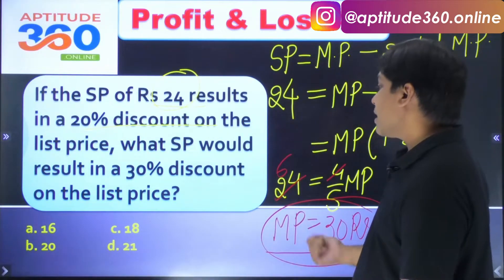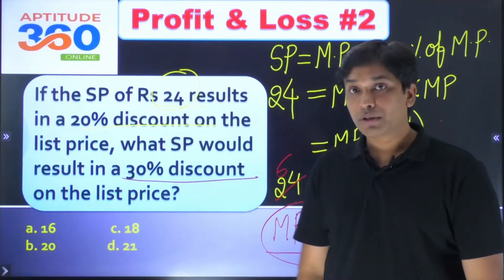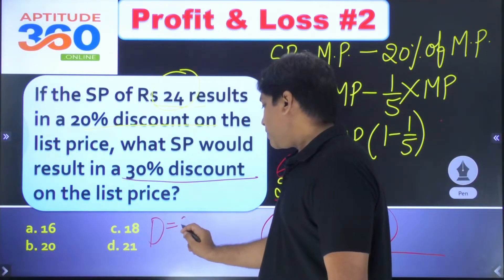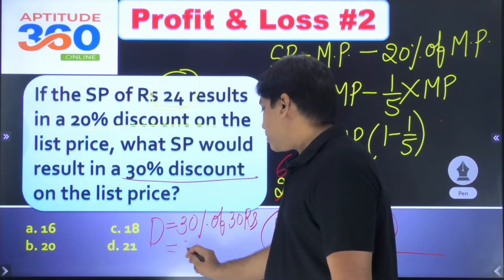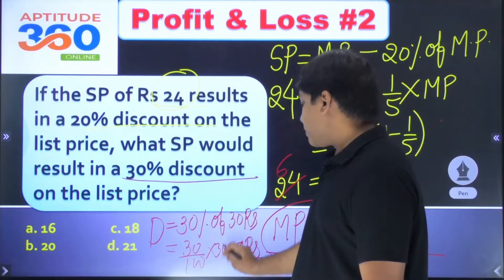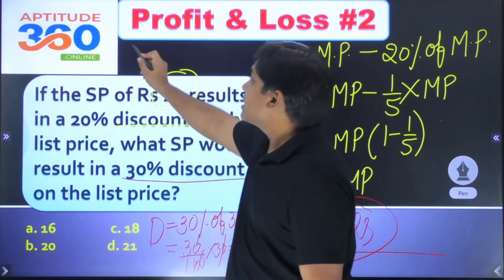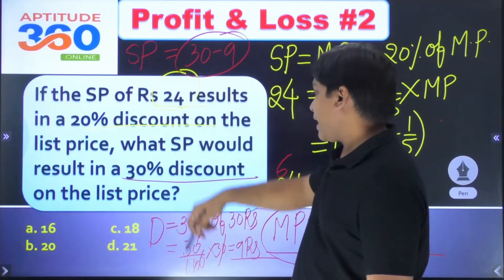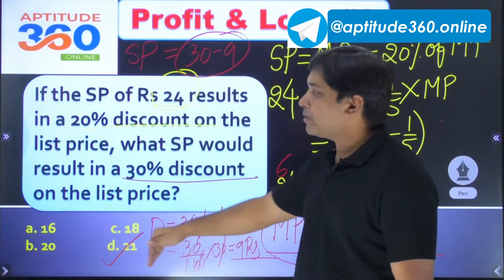Marked price is Rs. 30. Giving 30% discount on the marked price: discount equals 30% of 30, which is Rs. 9. So selling price equals 30 minus 9, which is Rs. 21. This is how you solve problems step by step.